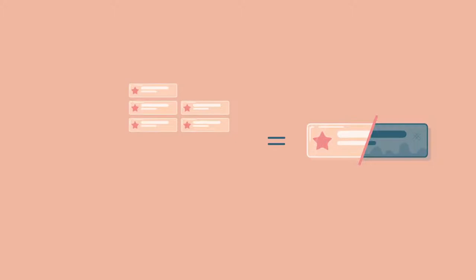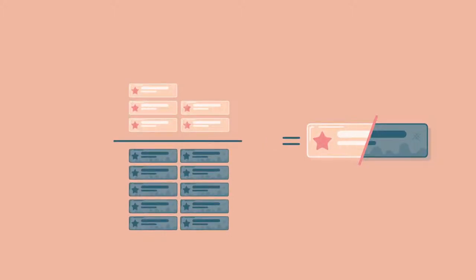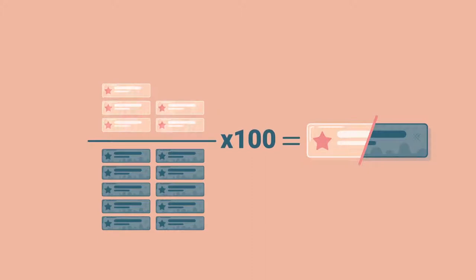Qualified leads over time divided by total of leads over the same period of time times 100 equals ratio of leads to sales qualified leads.